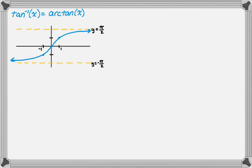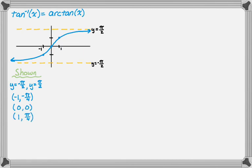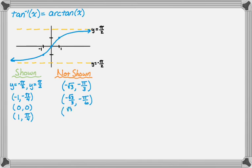Arc tangent has five key features that differ from arc sine and arc cosine: instead of five points, you get two horizontal asymptotes at y equals negative pi over 2 and y equals pi over 2, plus three points — negative 1 comma negative pi over 4, 0 comma 0, and 1 comma pi over 4. Those are just where tangent values are rational, chosen for convenience. There are others we know — the pi over 6 and pi over 3 values — but they're hard to place on a graph, so they're not shown.